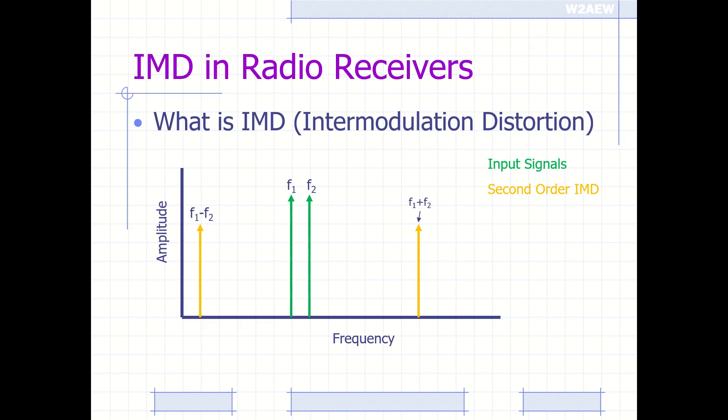They're generally not a problem in a receiver because they're often pretty far away from the signals of interest at F1 and F2. The other second-order intermod products will be 2 times F1 and 2 times F2, again far enough away from our fundamental frequencies that they're generally not a problem.